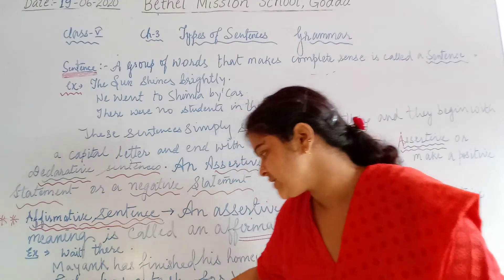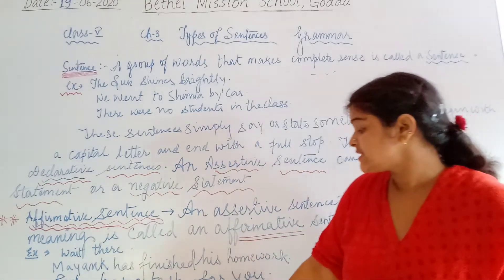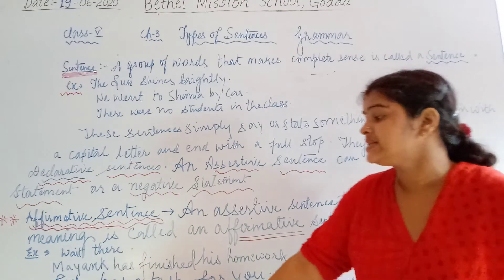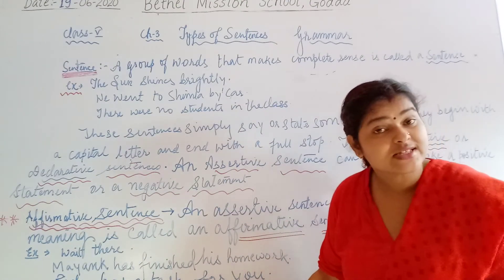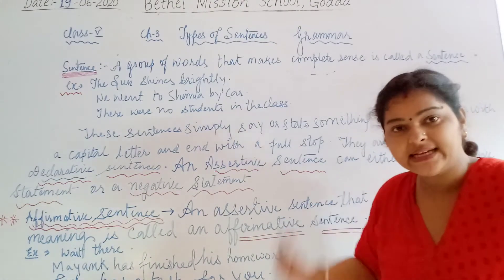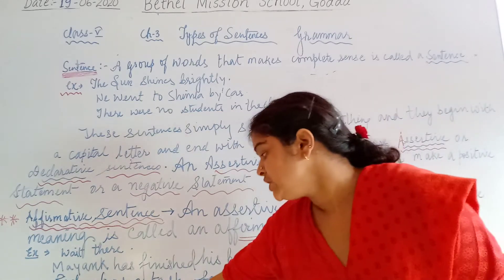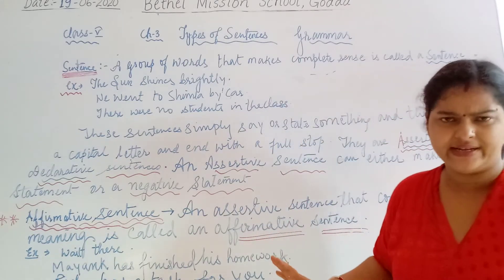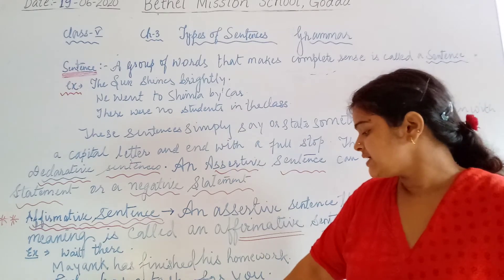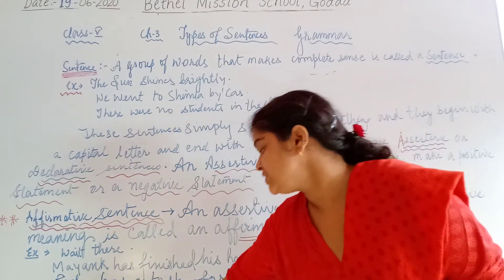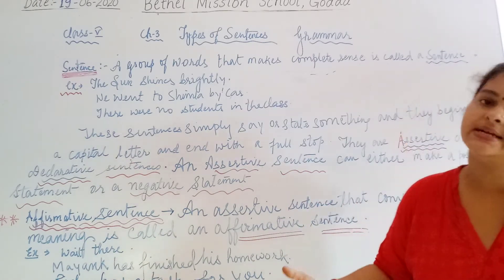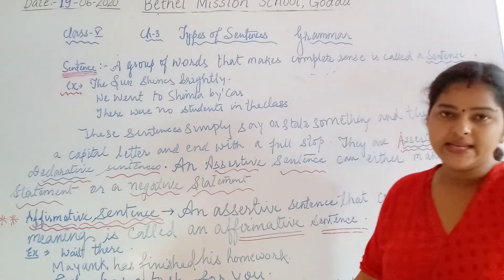The second type is the negative sentence. An assertive sentence that conveys a negative meaning is called a negative sentence — it is not positive in nature, it is negative in sense. For example: 'Do not wait here' — that is a negative attitude. 'Reacha has no task for you' — meaning Reacha has not given you any task. That is a negative sentence.